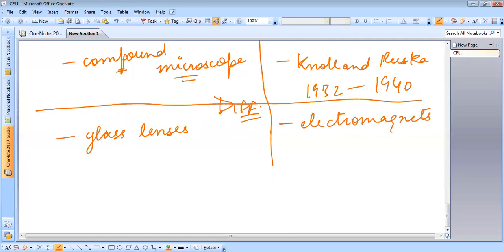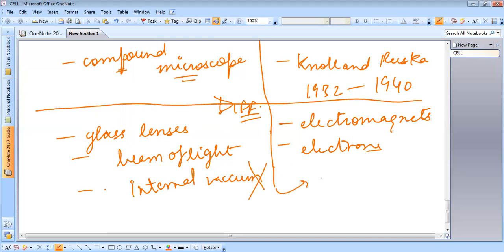And light microscope uses a beam of light to illuminate the object, whereas the electron microscope uses electrons to illuminate the object. In a light microscope, the internal vacuum is not required. It is required in electron microscopes.